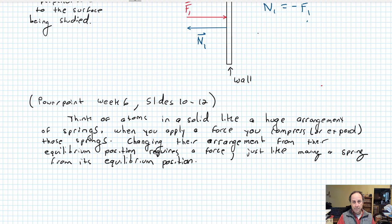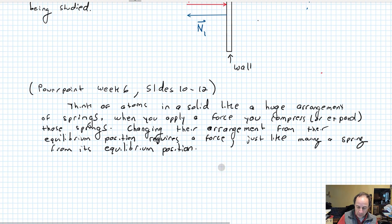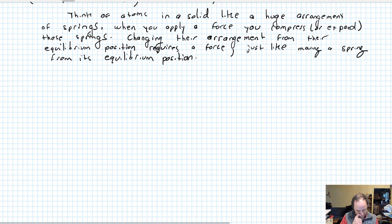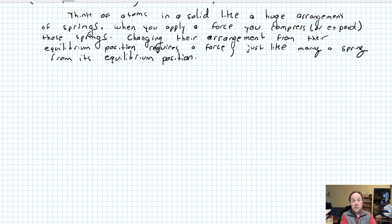To recap: we have a force applied to the wall, and the wall responds with a normal force that is equal and opposite. Now, what happens when that applied force is not perpendicular — not normal — to the wall?